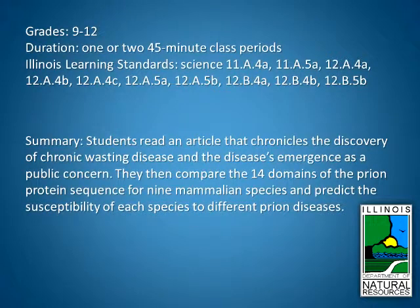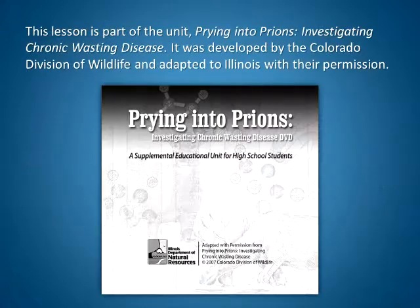Students read an article that chronicles the discovery of chronic wasting disease and the disease's emergence as a public concern. They then compare the 14 domains of the prion protein sequence for 9 mammalian species and predict the susceptibility of each species to different prion diseases. This lesson is part of the unit Prying into Prions: Investigating Chronic Wasting Disease, developed by the Colorado Division of Wildlife and adapted to Illinois with their permission.